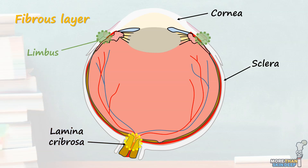The sclera fuses with the cornea at the limbus, or corneoscleral junction. The cornea is the second structure within the fibrous layer. This very important structure makes up the anterior sixth of the eye and is the main structure involved with the refraction of light. It provides a dioptric power of 43 diopters, which is three times more than a lens in the healthy eye. Unlike the sclera, the cornea is transparent due to uniform arrangement of collagen fibres within lamellar fibrils.